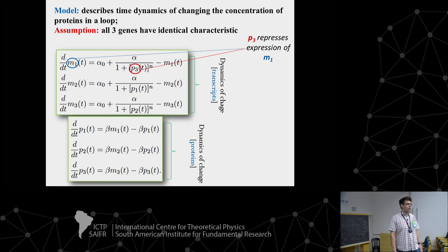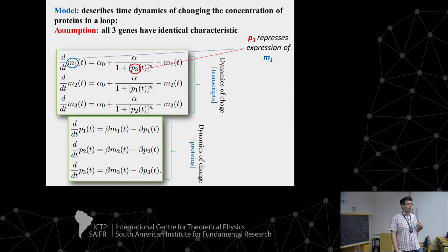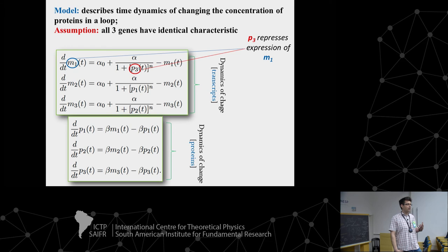By rescaling concentrations by the dissociation constant and time by the degradation rate, you reduce the parameter space. In biochemical measurements, concentrations are typically expressed as relative ratios rather than absolute values, so this rescaling is physically reasonable. This approach of making models dimensionless is very common in systems biology to reduce the number of parameters.